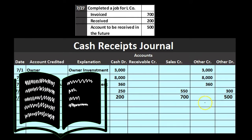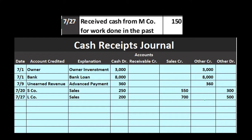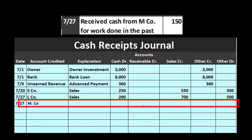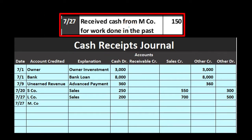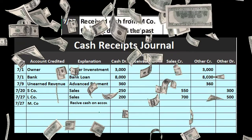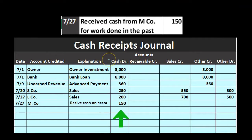Note that transactions with more than two accounts are more complex to handle here. On 7-27, we received cash from M Company for work done in the past — received cash on account. We label M Company to record it in the subsidiary ledger. Cash goes up by $150, and the other side goes to accounts receivable as a credit — which is exactly what we normally expect in the cash receipts journal: someone paid us, so accounts receivable goes down.